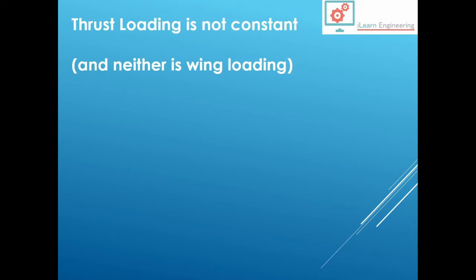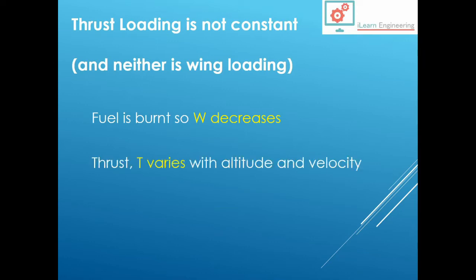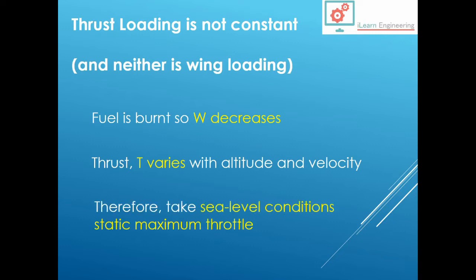Now then, all of that we just talked about was assuming that the thrust loading and the wing loading are constant. And of course they're not. They're not constant. Fuel is burnt throughout the flight, so therefore the weight is going to decrease. The thrust is going to vary with altitude and velocity. And so therefore, when we're looking at these as design parameters, we need to agree on what the values are going to be so that we compare one against the other. And so it is fairly standard in this case to take the values at sea level, sea level conditions under static, i.e. zero velocity, and maximum throttle.